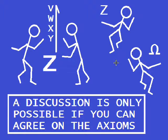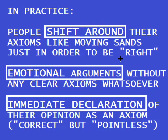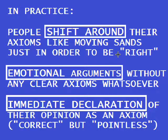You can only discuss and thereby jointly explore truth if you agree on the axioms. In practice, for discussions in particular on the internet but also in any other sphere of life, people shift around their axioms just in order to be right. They will tell you what I meant is something else and you just misunderstood me. They in fact don't want to reach any sort of truth — they just want to be right or to feel as having been right. You may give or deny them this emotional gratification, but you will not reach any truth in discussions with them.